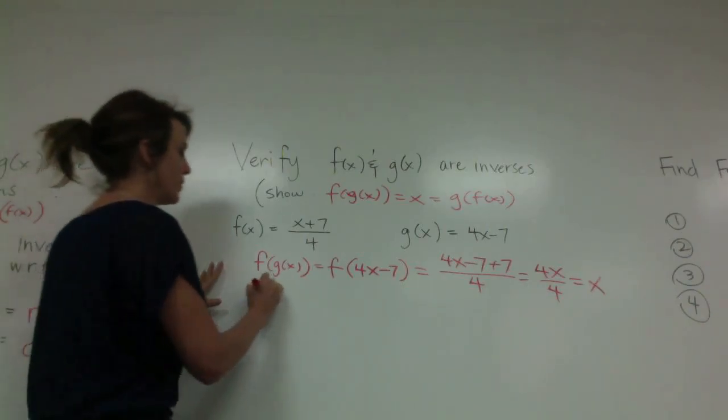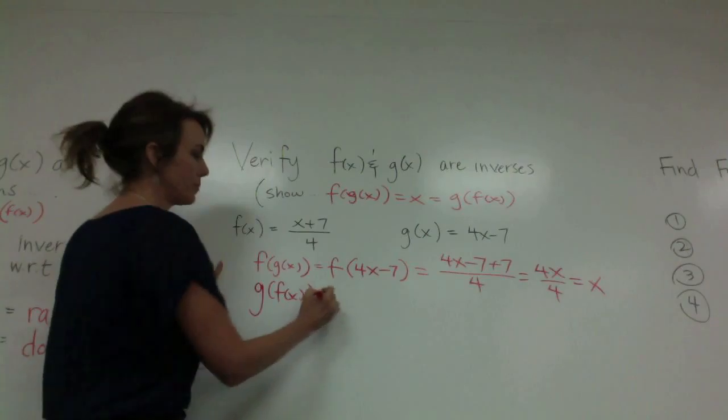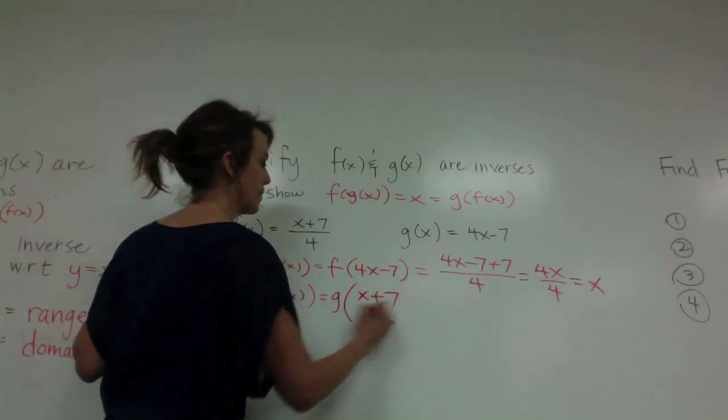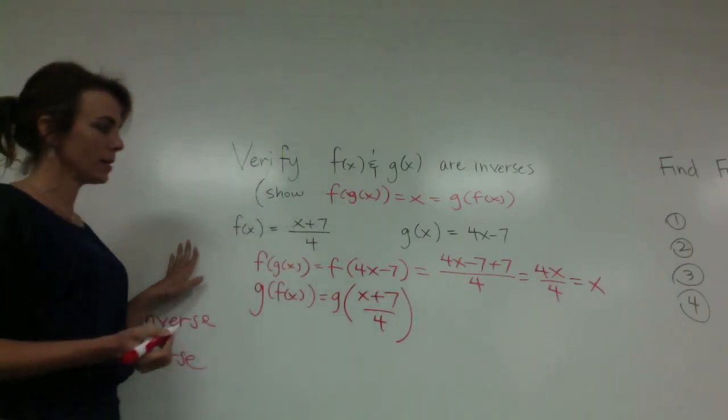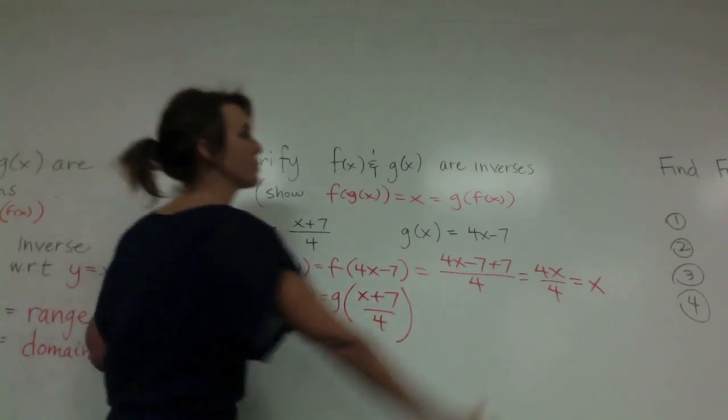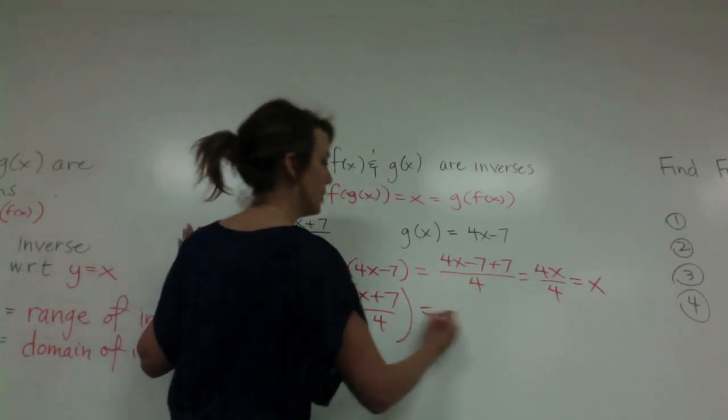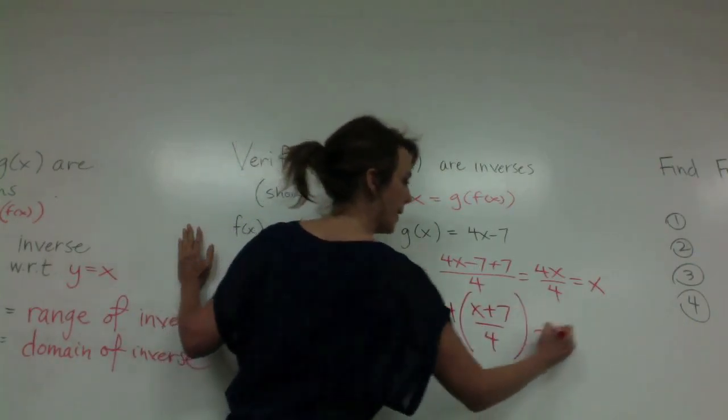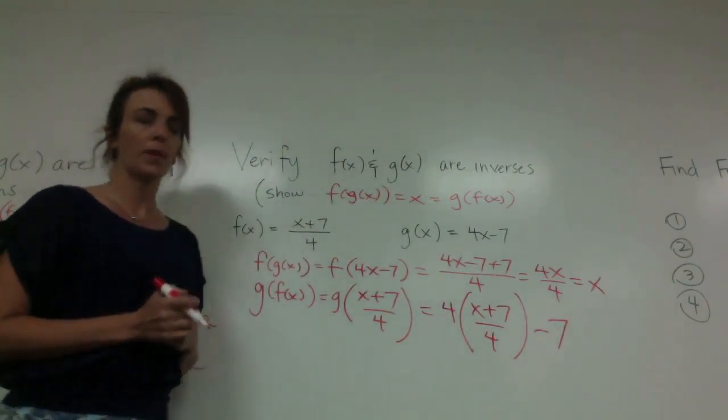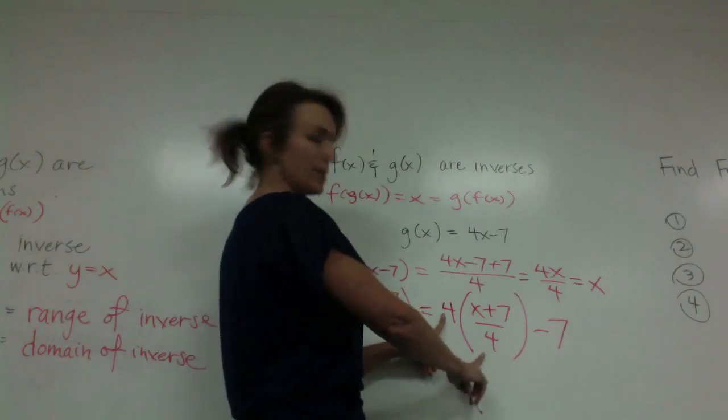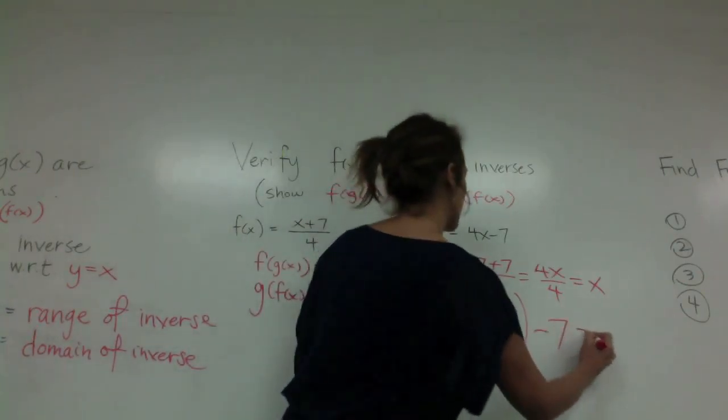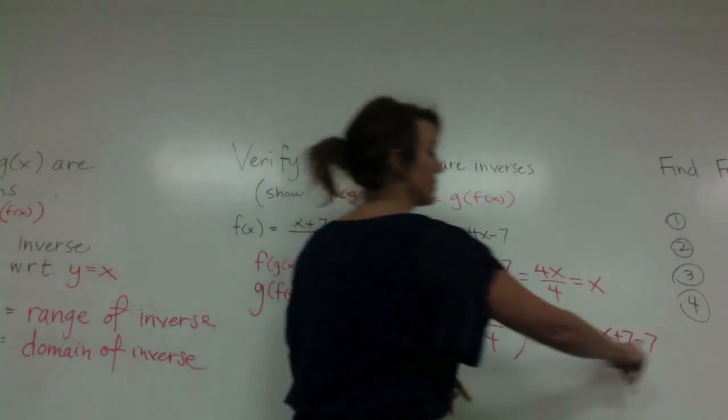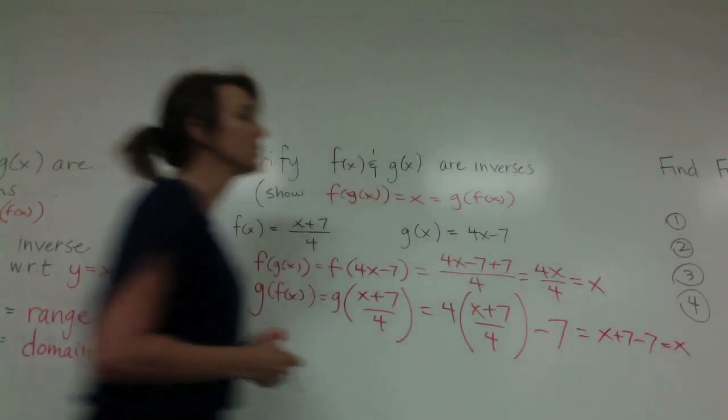Now let's look at g(f(x)). That is g of (x+7)/4, right? So I'm going to take this and substitute it in. We're going to say 4 times (x+7)/4 minus 7. We can see that these 4s cancel out, so this is the same as saying x+7-7. Now we know that these 7s cancel out, so that equals x.